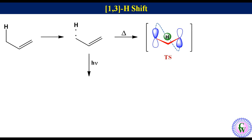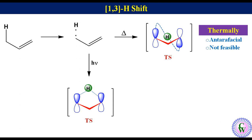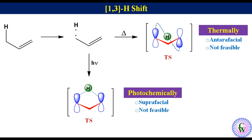Under photochemical condition, the HOMO will have a sigma plane symmetry and will not have C2 symmetry. Here is the hydrogen atom. We can see that it will opt for suprafacial migration through this transition state. However, because of the smaller size of the hydrogen atom, it cannot bind simultaneously to overlap with the two p orbitals. So we can summarize: under thermal condition, 1,3 H Shift is antarafacial and not feasible; while under photochemical condition, it is suprafacial and also not feasible.